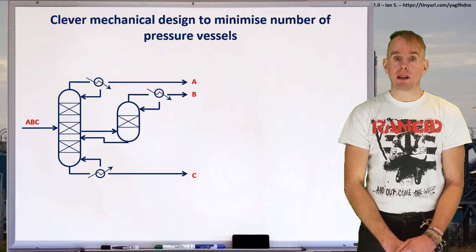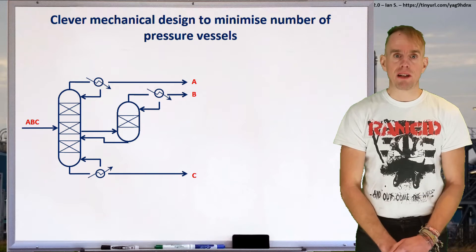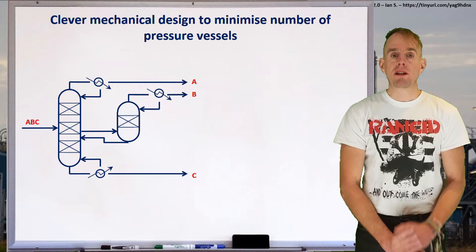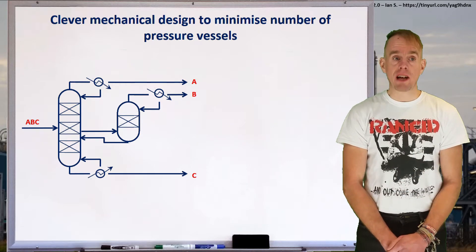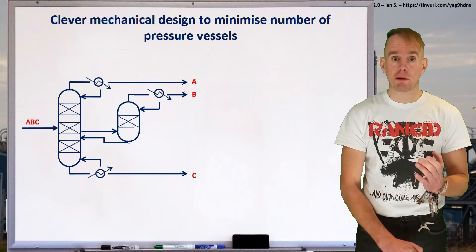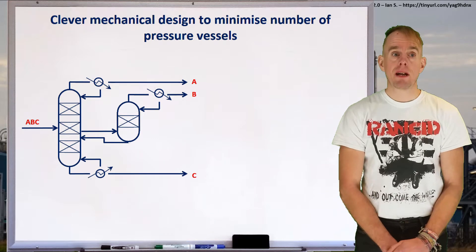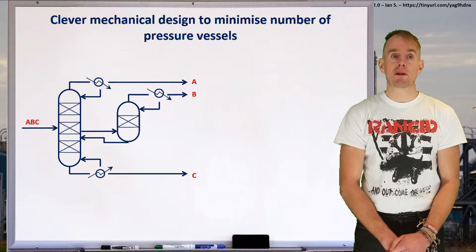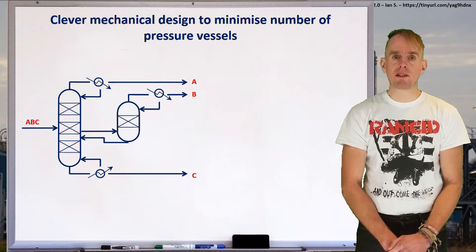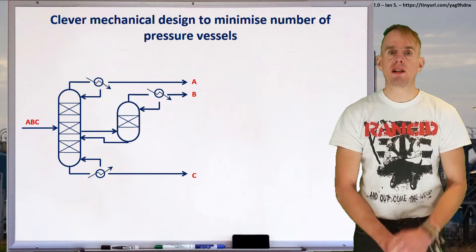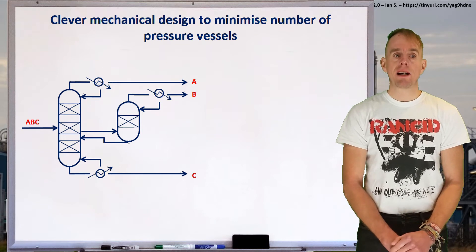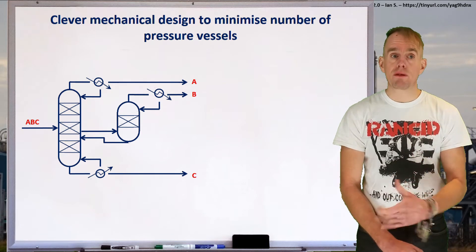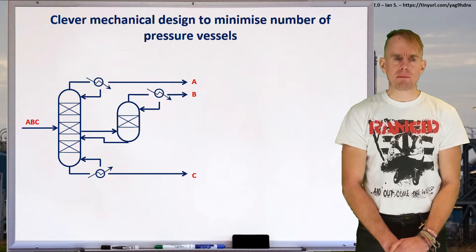What we have is a mixture of three components — let's call them A, B, and C in true engineering nomenclature. The most volatile species here is A, and that is coming off the top of the primary distillation column. We've got an intermediate volatility species, which is B, and we've got our least volatile species, C. We can see that the column configuration we've elected to go with has a side stripper that allows us to separate B from some side draws from the main column.